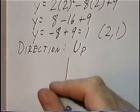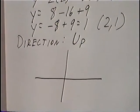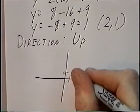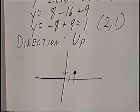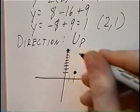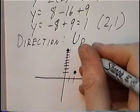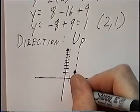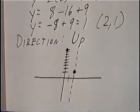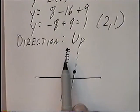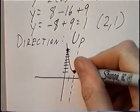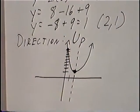From here we can graph. We draw the vertex at (2, 1). The y-intercept is at 9. For the axis of symmetry, we can draw a dashed line through x = 2, which makes the graph symmetrical on the left and right. The parabola opens up, passing through the y-intercept, turning at the vertex, and continuing up on the other side.